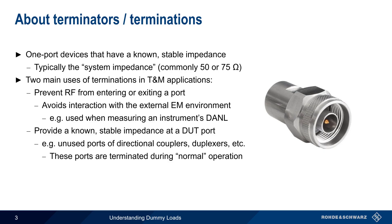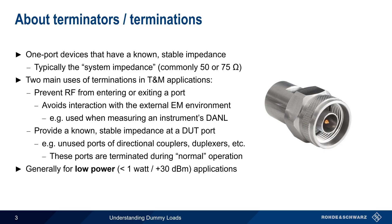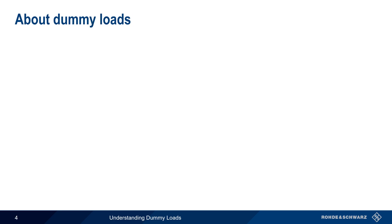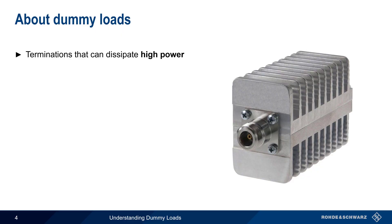It's very important to keep in mind that terminations are generally used only for low-power applications, typically less than about plus 30 dBm or 1 watt. They are not designed for, nor intended to be used for, sinking or dissipating higher levels of RF power. In order to sink higher RF power levels, a special type of termination is required, and this is commonly called a dummy load.